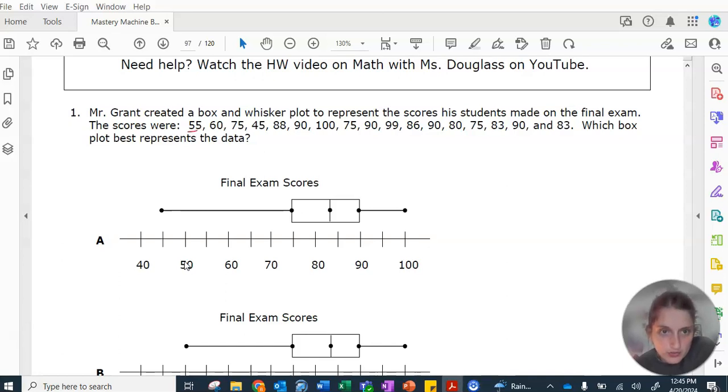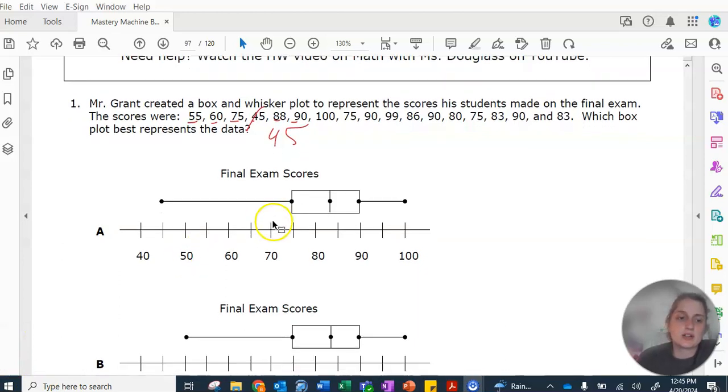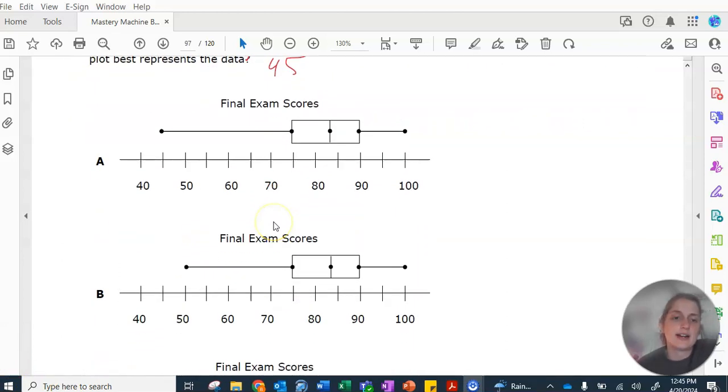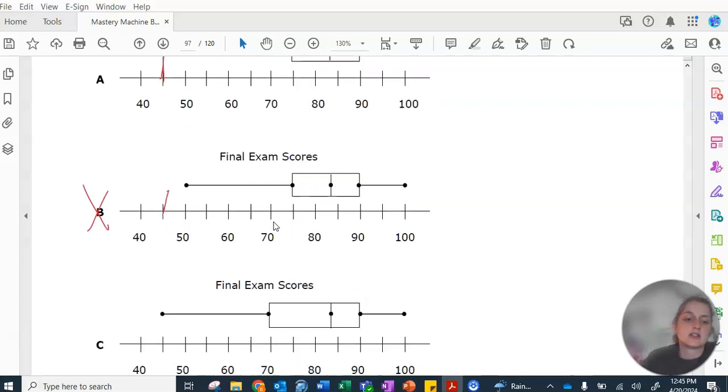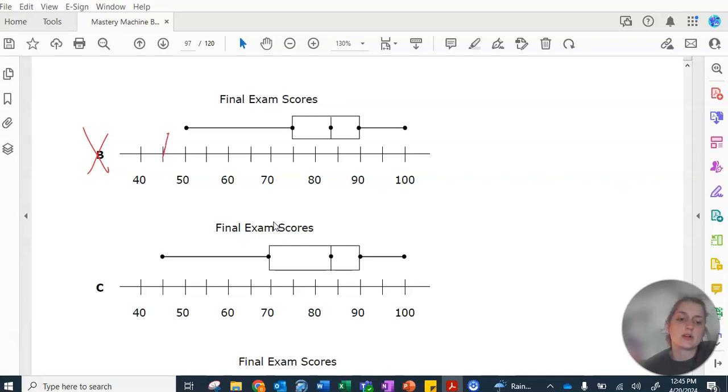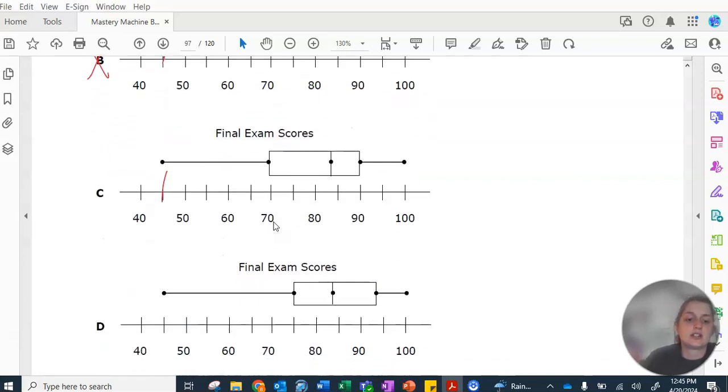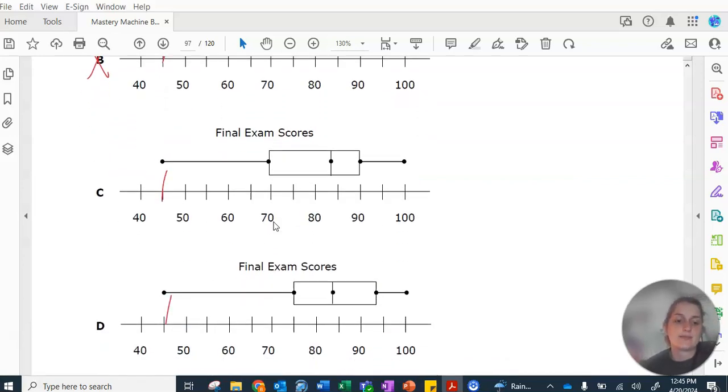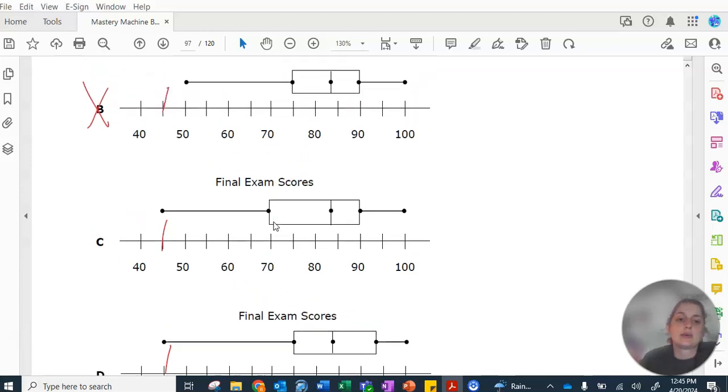I see some 50s, some 60s, some 70s, some 40s, 80s, 90s. I'm starting with the 40. Before I do my whole list, let me confirm. A has a minimum at 45, B does not. C has a minimum at 45, so does D.